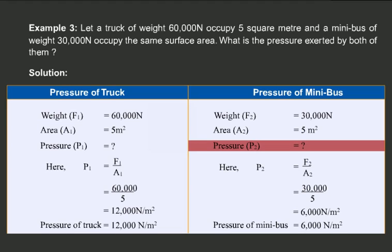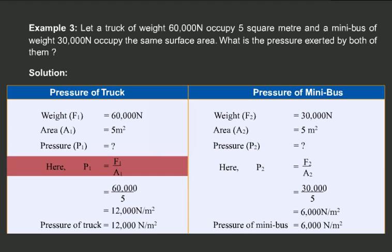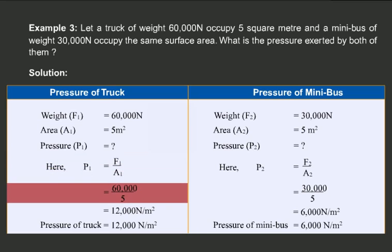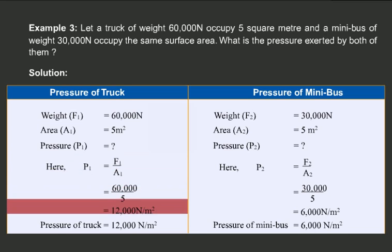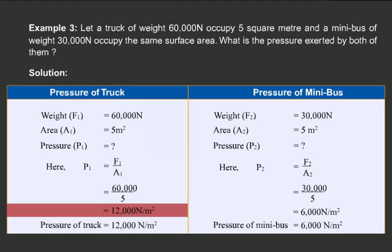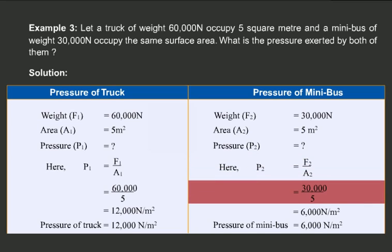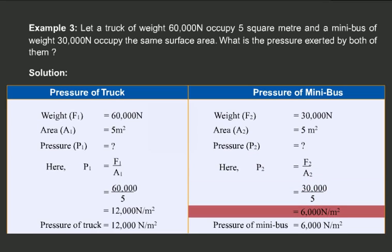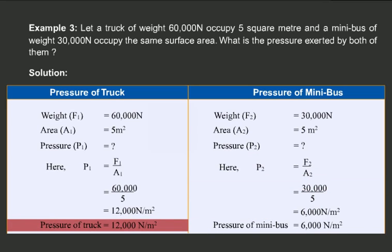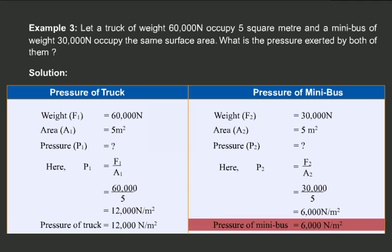Students, first, for solving for the truck, we have the relation P1 equals F1 by A1. Substituting the given values, P1 is equal to 60,000 by 5, which gives us 12,000 Newton per meter square. Similarly, solving for the minibus, P2 is equal to F2 by A2, which gives 30,000 by 5, equal to 6,000 Newton per meter square. Therefore, the pressure of the truck was 12,000 Newton per meter square, and the pressure of the minibus was 6,000 Newton per meter square.